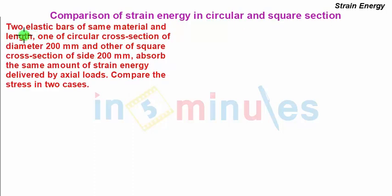The problem statement is: two elastic bars of same material and length, one of circular cross section of diameter 200 mm and other of square cross section of side 200 mm, absorb the same amount of strain energy delivered by axial loads. Compare the stresses in two cases.